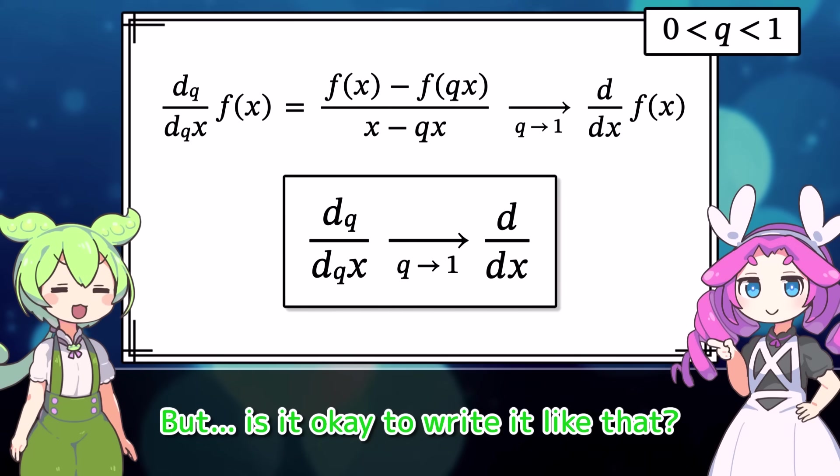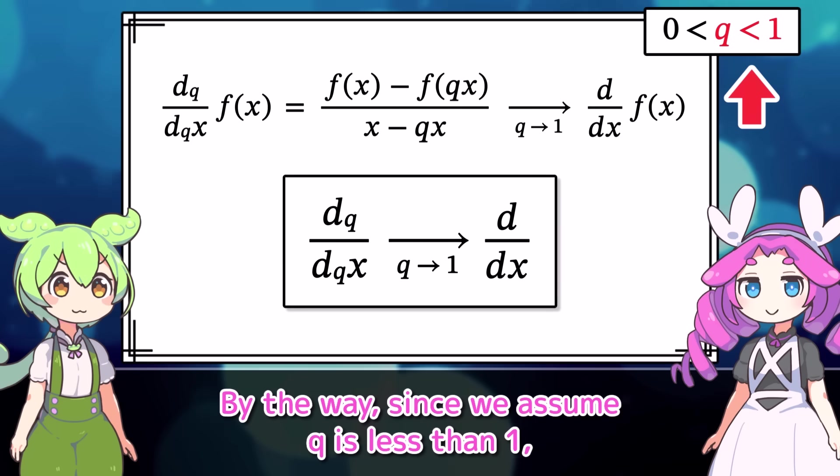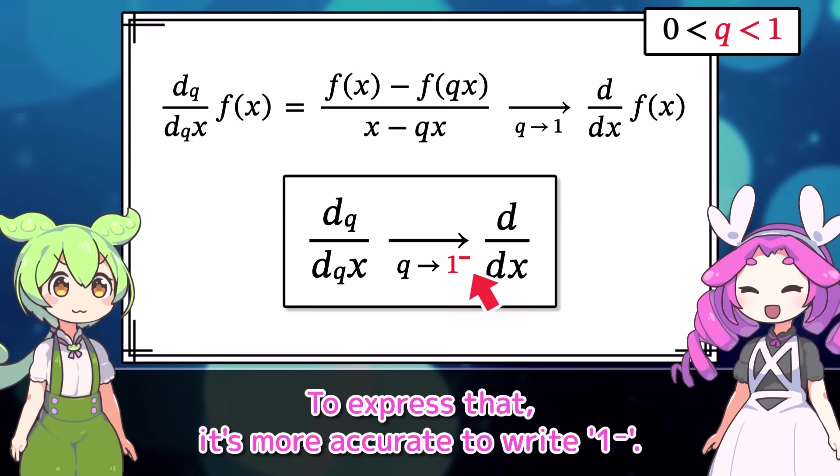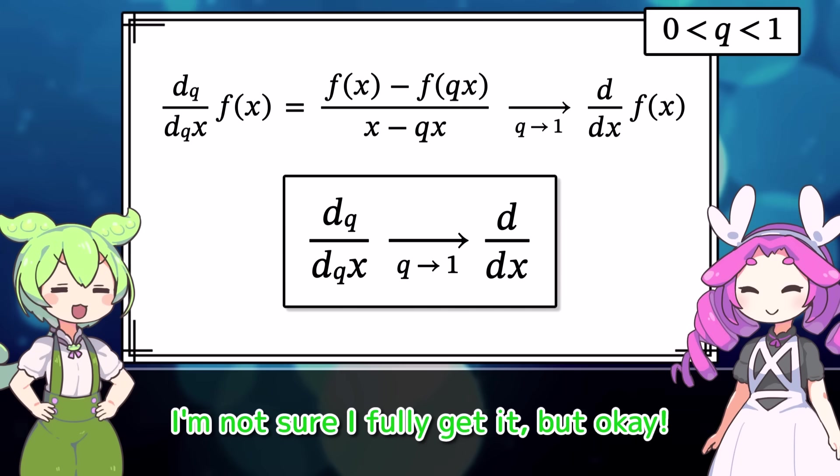But, is it okay to write it like that? Please forgive a bit of notation abuse. By the way, since we assume q is less than 1, more precisely, q approaches 1 from smaller values. To express that, it's more accurate to write 1 minus. But we'll omit that detail here, so keep it in mind. I'm not sure I fully get it, but okay.